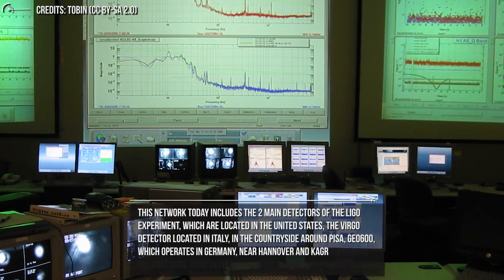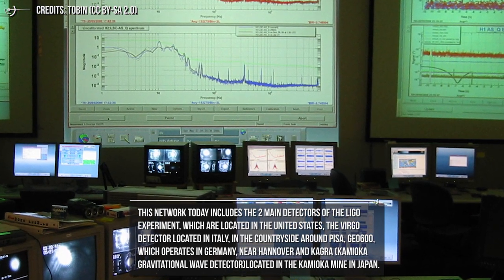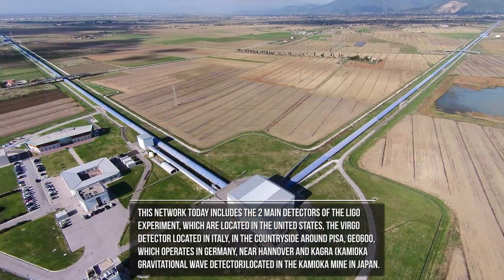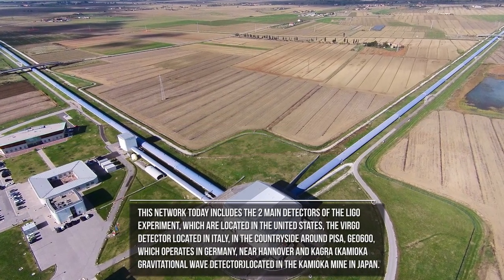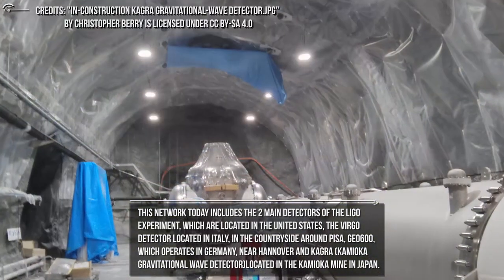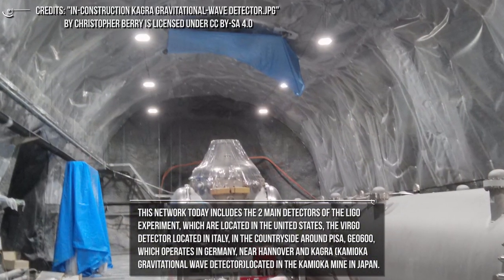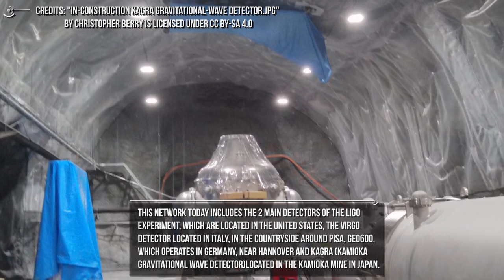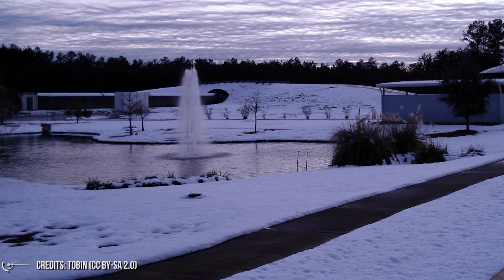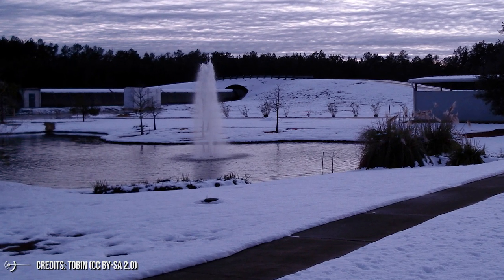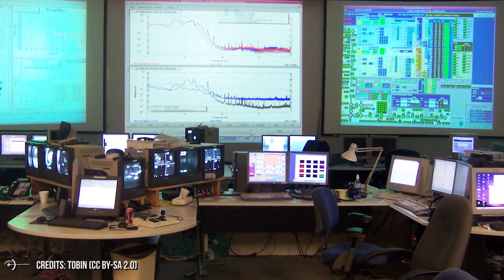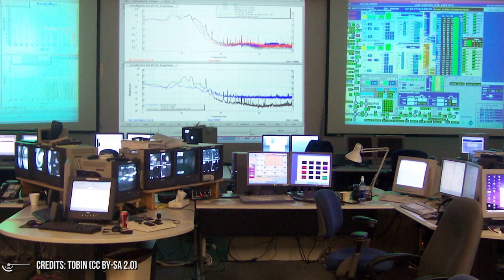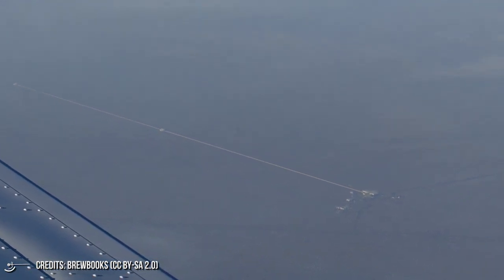This network today includes the two main detectors of the LIGO experiment located in the United States, the Virgo detector located in Italy in the countryside around Pisa, GEO-600 which operates in Germany near Hanover, and KAGRA, the Kamioka gravitational wave detector located in the Kamioka mine in Japan. To improve the accuracy of the survey, the network will be further expanded in the coming years. LIGO India will be a third twin of LIGO interferometers, will be built in India and will enter into operation in 2025, and other ground and satellite detectors are currently under construction.